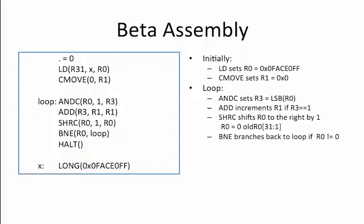In other words, it's counting the total number of 1s in the original value loaded from address x. The loop ends when all the 1s have been counted, at which point R0 is left with a 0 in it because all the 1s have been shifted out. R1 is left with a number of 1s in the data. 0x0FACE0FF equals, in binary: